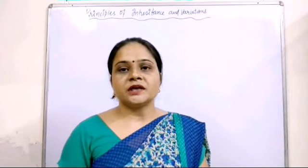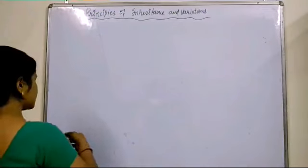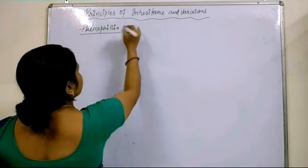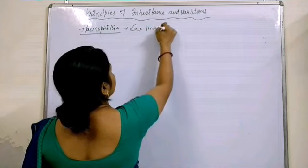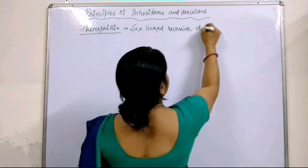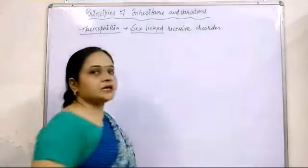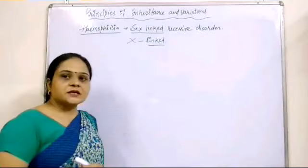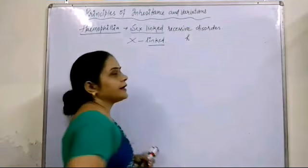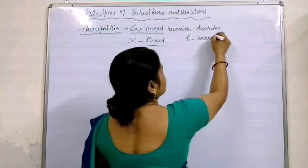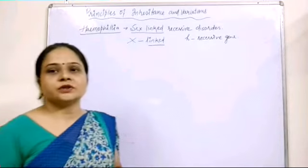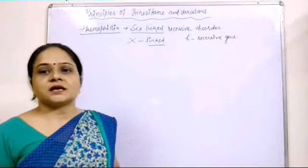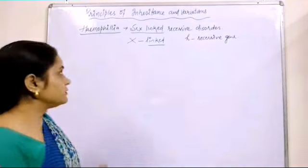In this video we will study about hemophilia, which is a sex-linked disorder. Hemophilia is a sex-linked recessive disorder — it is an X-linked disease. The recessive gene, shown as H, is located on the X chromosome. This disease may occur in both males and females, which we will discuss later in this video.